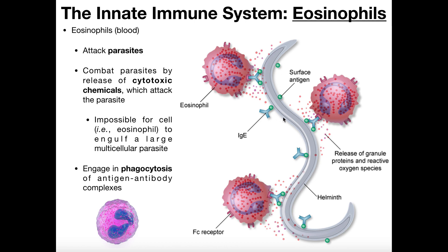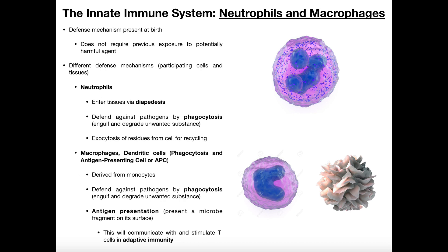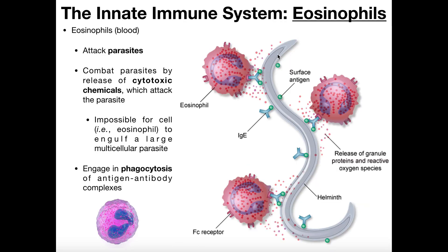When the eosinophil binds to the activated IgE, the eosinophil itself becomes activated. Since the parasite is much larger than eosinophils, it would be too large to be phagocytized even by a very large macrophage. So the cytotoxic chemicals over time will actually break up this multicellular organism into individual cells, and then the eosinophils can perform phagocytosis on the remains of the parasite. The first step is complexing with IgE, then releasing cytotoxic chemicals, and over time the organism breaks apart and the eosinophils phagocytize what's left.